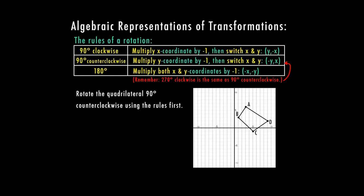Here I have a quadrilateral and I want to rotate it 90 degrees counterclockwise using my rules — that follows the second rule. First I label my points: A is at (3, 6), B is at (1, 3), C is at (5, -1), and D is at (9, 2).